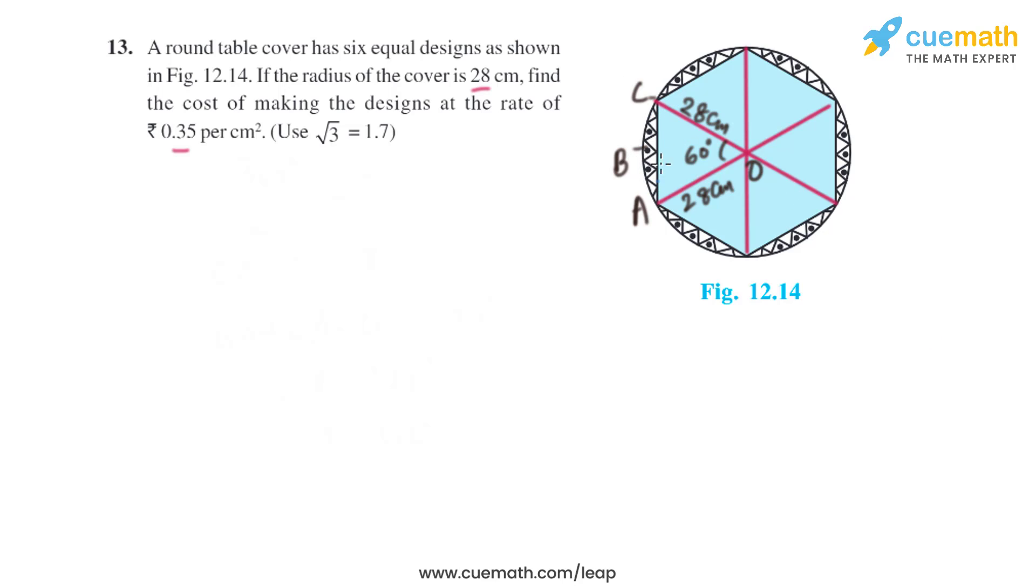As it is given in the question that all six designs are equal, if we find the area of one design we can simply multiply it with six. We can find the area of one design by finding the area of sector OABC and subtracting the area of triangle OAC from it. Then we can multiply it with six to find the area of all six designs.